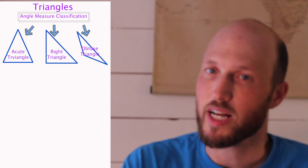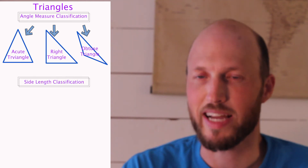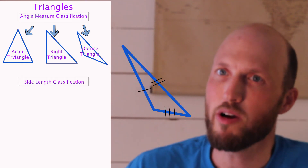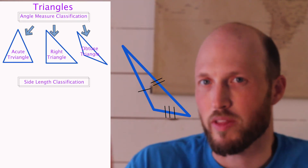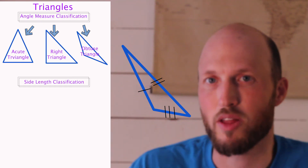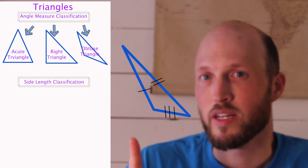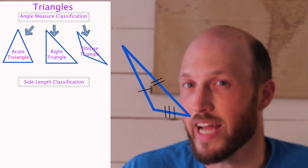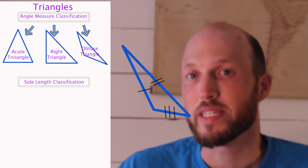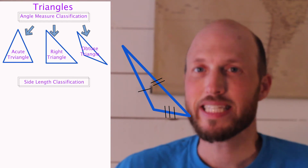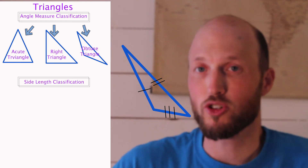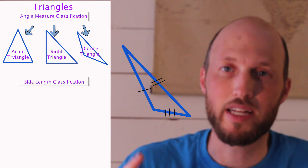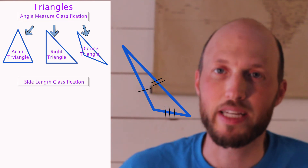There is another way we can classify triangles: by side length. Notice there are little lines representing each side of this triangle. This one has one dash, this one has two, this one has three, which means they are all different. Since every single one has a different number of dashes, that means they're all different, which means this triangle is scalene — all sides are different. Sometimes you won't have these lines, but if they're all different lengths, it's going to be a scalene triangle.